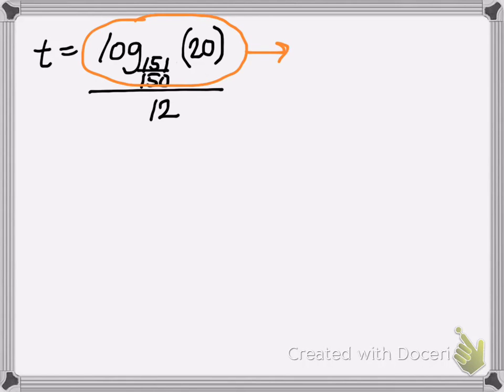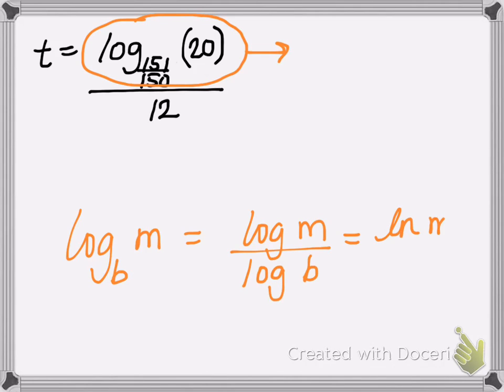So just remember that your change of base formula says that when you have log base B of M, you can change that into any base that you want. If you chose base 10, it would be log of the argument divided by the log of the base. If you chose natural log, base E, then it would be the natural log of the argument divided by the natural log of the base. But you could choose any base that you want.